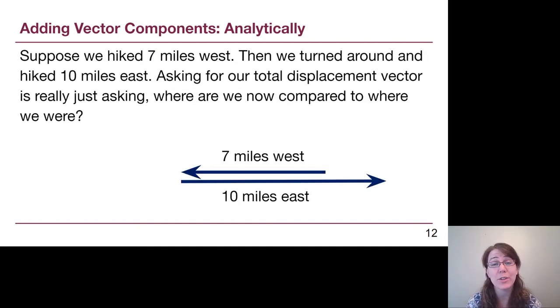We actually already know how to deal with adding vector components together from our work in chapter 2. Let's say for example we only have a couple of x components, horizontal components. If we hike seven miles west and then we turn around and we hike 10 miles east, when we ask for our total displacement vector, which sounds very physics, math kind of question, we're really just asking where are we now compared to where we started.